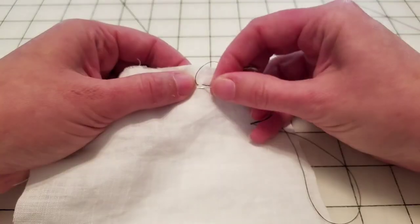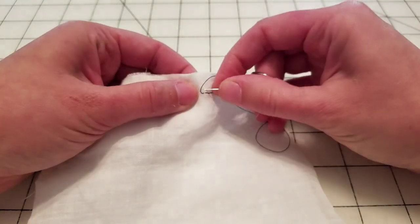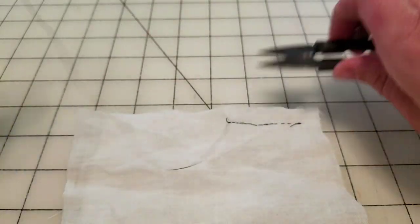All right, so I'm going to tie this off. This is going to be a very short seam. And I'm just doing three stitches in place again. I'm going to snip.